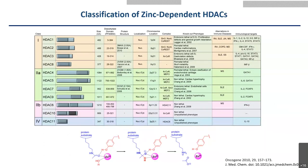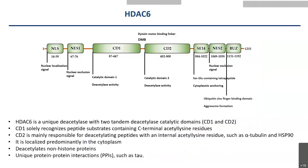Eleven isoforms have been identified and can be divided into four subgroups. Among them, HDAC6 is our major focus. Unlike other isoforms, HDAC6 is relatively unique because it is the only isoform that has two tandem deacetylation catalytic domains, named domain 1 and domain 2.